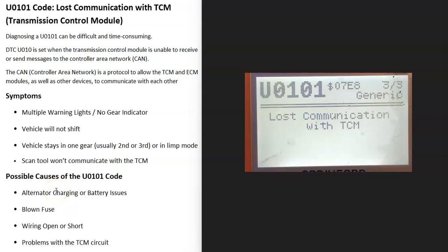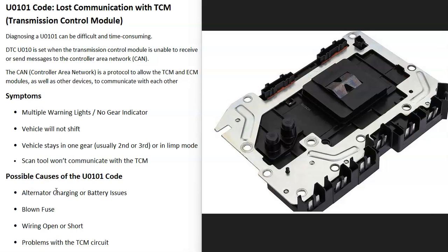Today I'm talking about a U0101 code — what it is and how you go about fixing it. A U0101 code is a lost communication with TCM. There's a computer module that controls all the transmission functions, and it uses information like vehicle speed and different things to control the shifting of the transmission. For some reason, the main computer has lost communication with it, and that's what needs to be troubleshot.